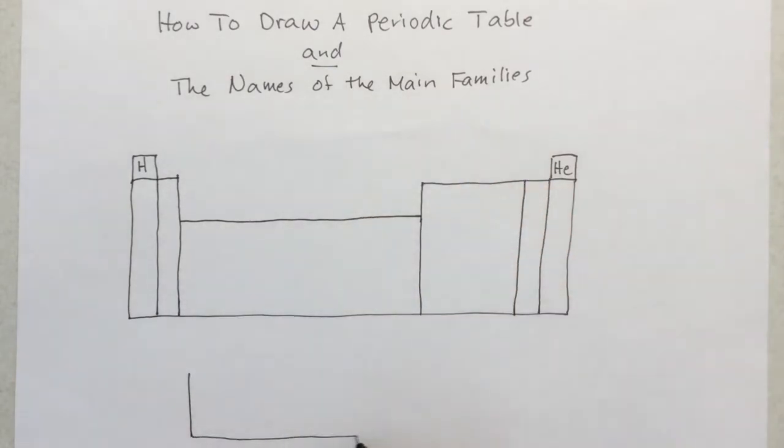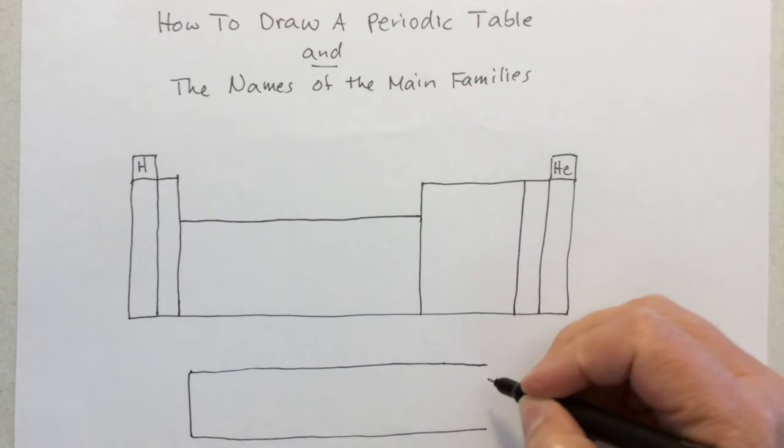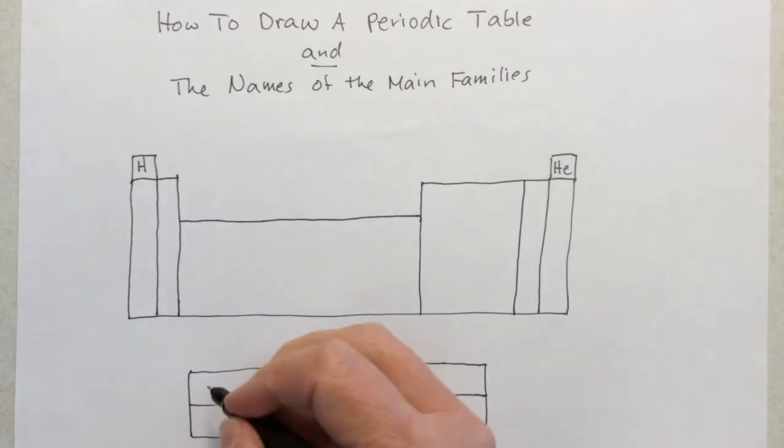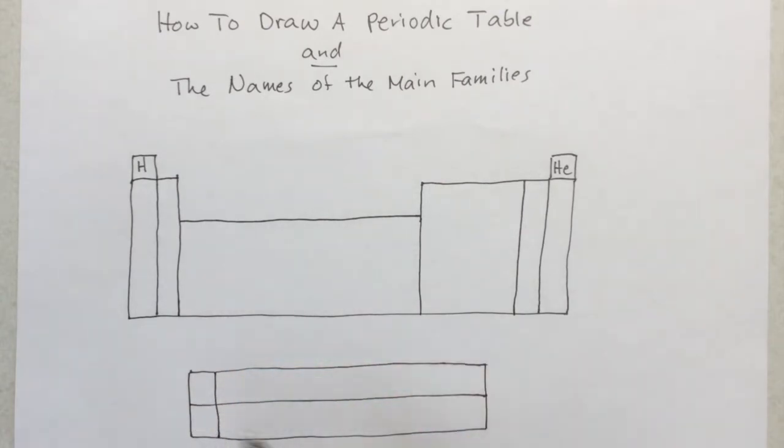Then you want to make a long box with that as the basis. It does not matter how long you make that. Final step for that part is to draw a line in the middle. Then we're going to give a couple elements their places there. This is lanthanum and this is actinium. They're the leaders of those two rows.